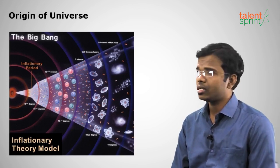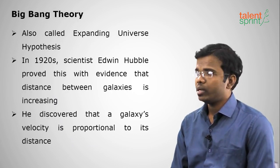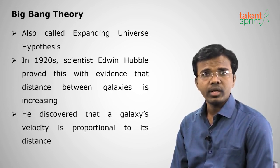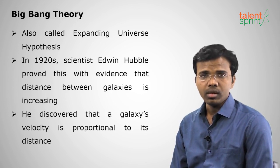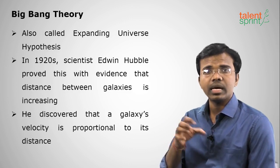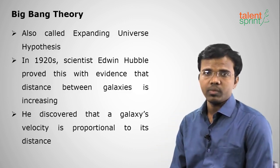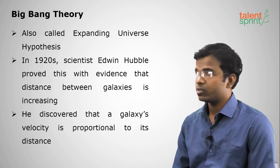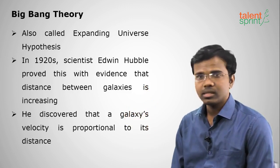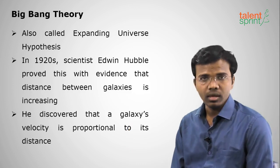The Big Bang Theory is also called the expanding universe theory. In the 1920s, scientist Edwin Hubble said that the distance between galaxies was increasing, meaning the universe is expanding. That's why it is called the expanding universe theory. He said that a galaxy's velocity is directly proportional to the distance between them.